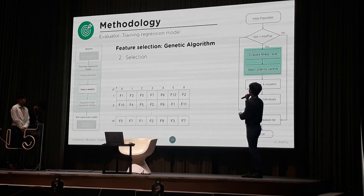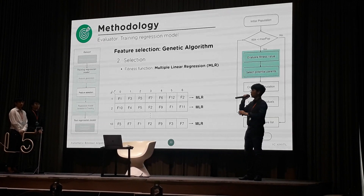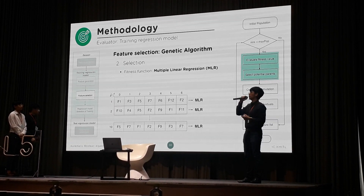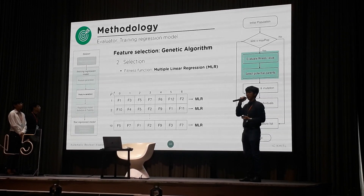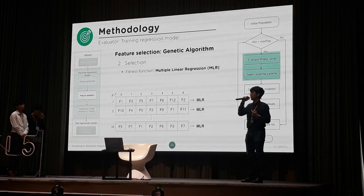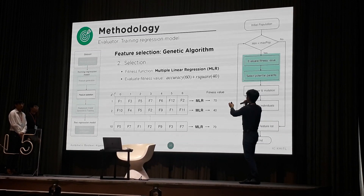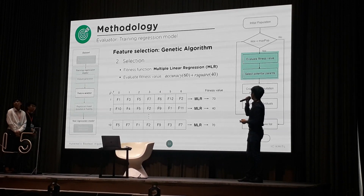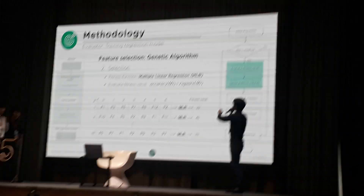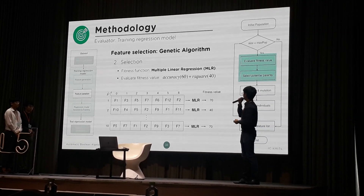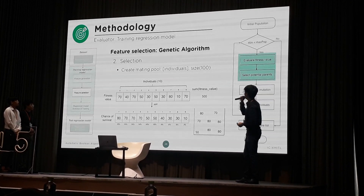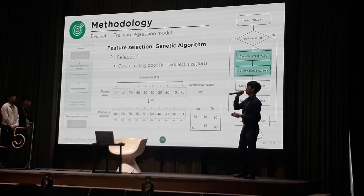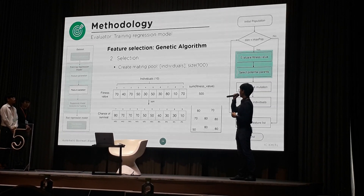After that, we are going to evaluate each one. We're going to feed each person into a machine learning model — we use a multiple linear regression model to evaluate the prediction score. So individual one has a fitness value of 70. Fitness values come from the accuracy of the model. We assign values to all of the individuals, and now we are going to sort those individuals by the fitness value.